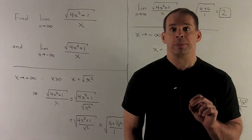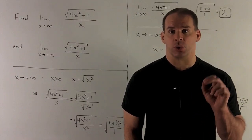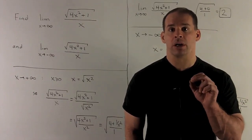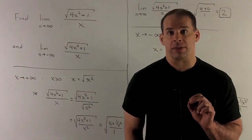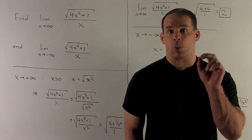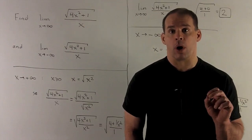Then, I can move the square root around the whole entire quotient. So, we're looking at 4x squared plus 1 over x squared. Then, we can divide x squared into everything, leaving me with 4 plus 1 over x squared over 1.